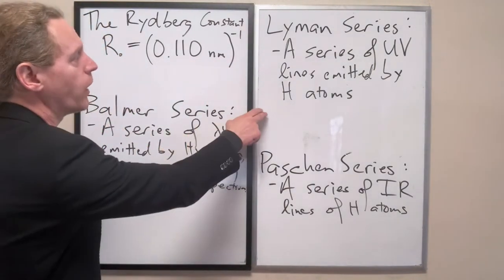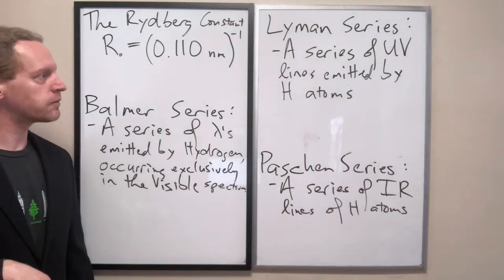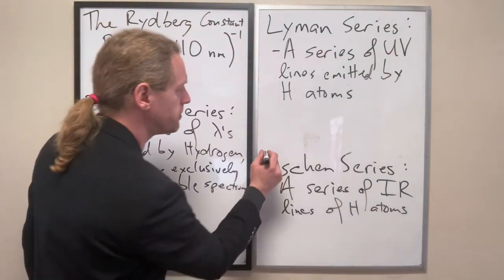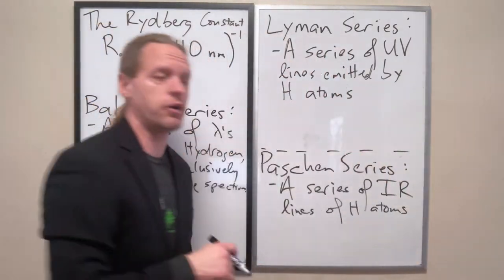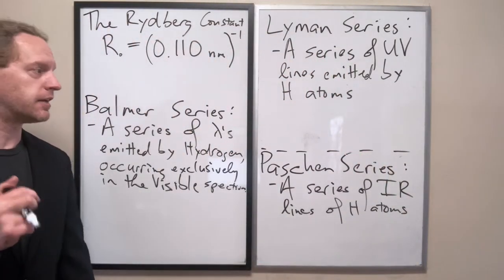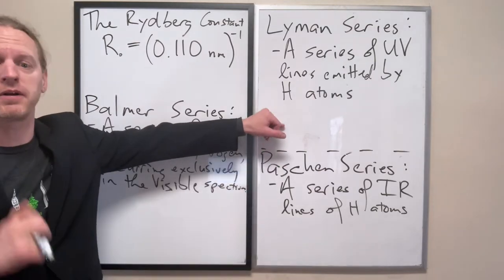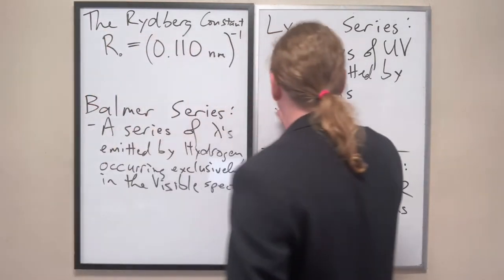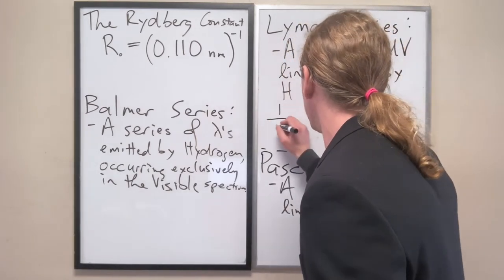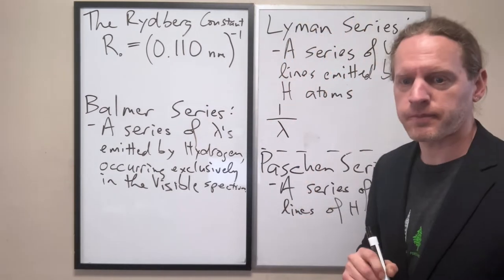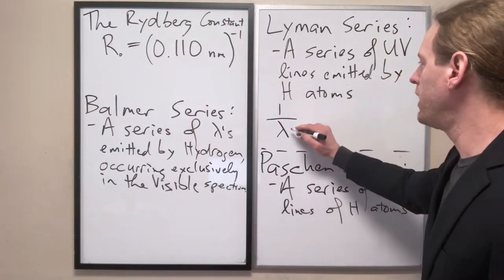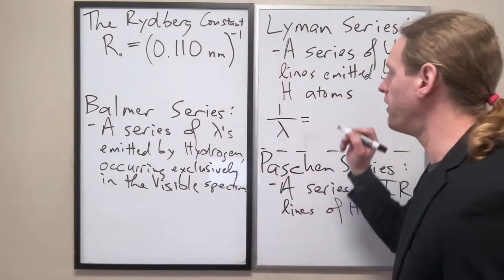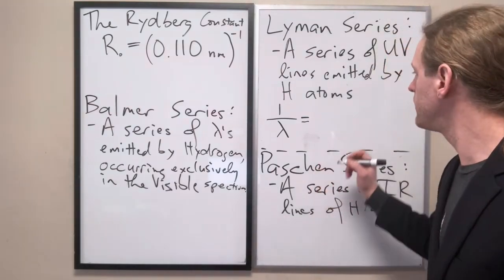In order to predict the wavelengths emitted by the Lyman series, I'm just going to write this down without motivating why it is what it is, because that's exactly what you're doing on your next homework set. But the exact formula that predicts the Lyman series is 1 over the wavelength.